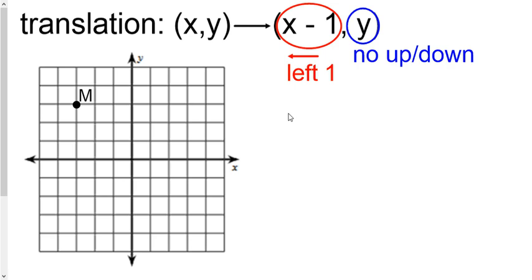So we go to the M, and we'd go left 1. Now the Y, nothing's happening to it. It's not being plus or minus, so that means don't go up, don't go down. We just want to go left 1. So go to M, move it to the left once, and label it M prime. We're done.